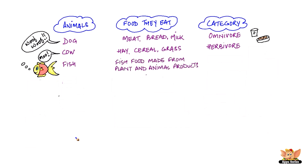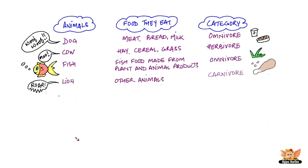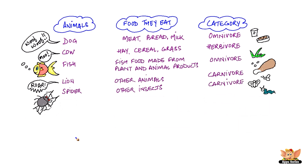Fish eats fish food that is made from plants and animal products. Fish in their natural habitat in a sea or river eats other sea plants, water plants and water animals, so that makes fish an omnivore. A lion eats other animals that it hunts and kills, so that makes it a carnivore. A spider eats other insects, so a spider would be a carnivore.